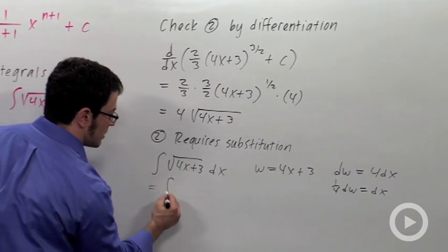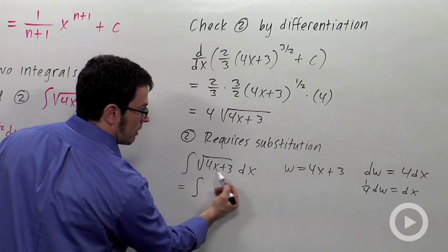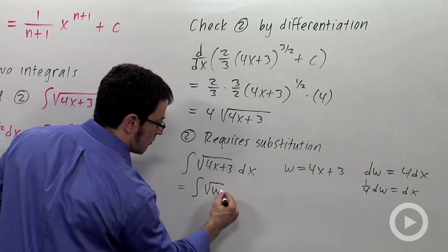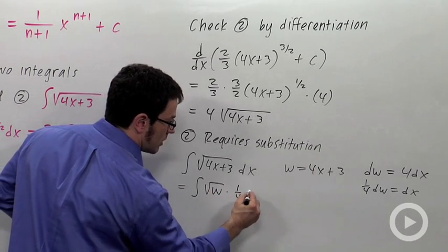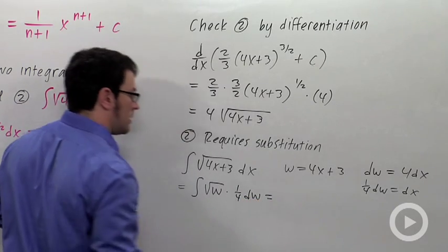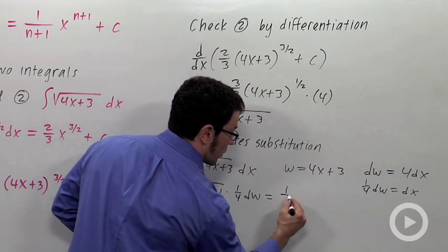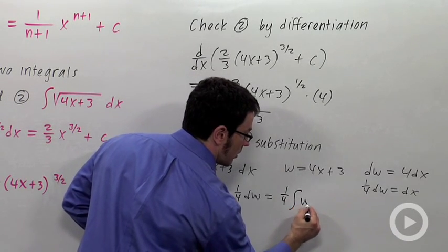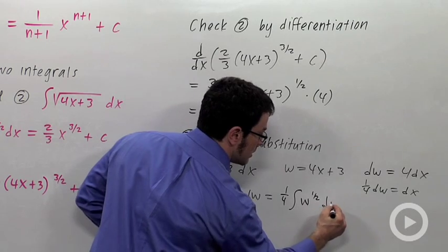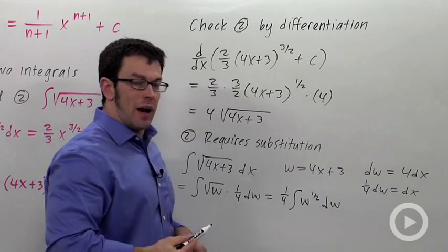So, I get the integral of the square root of w times 1 quarter dw. Now, I can switch this to w to the 1 half and pull the 1 quarter out in front. It's 1 quarter w to the 1 half dw. And now, I can use the power rule.